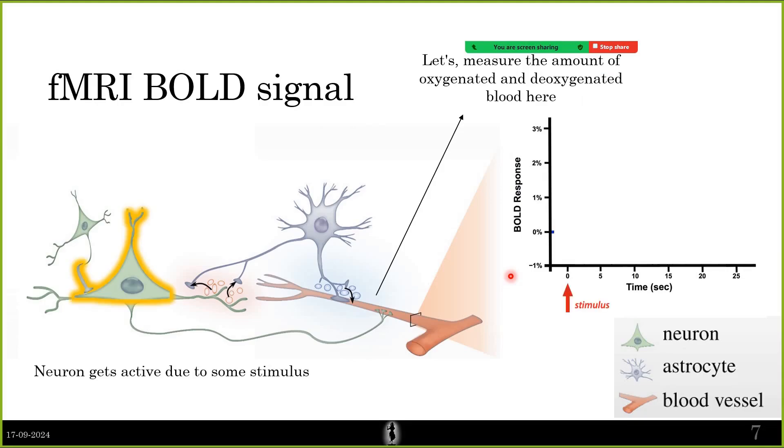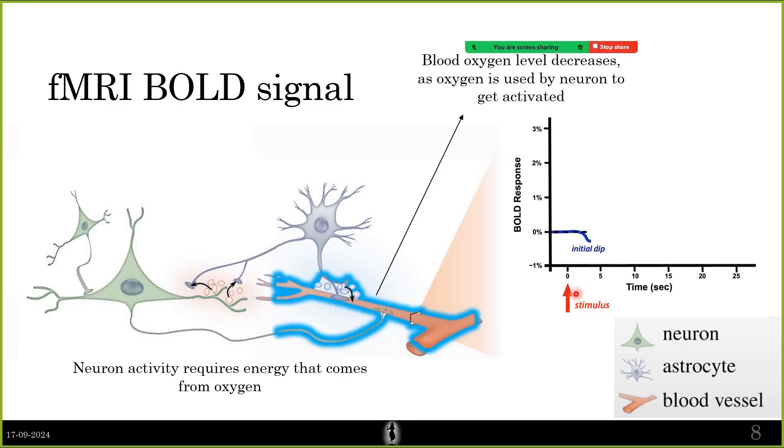Let's say the neuron gets activated due to some stimulus at time t equals zero. The neuron requires energy which comes from oxygen. To get activated, it requires energy that comes from oxygen, and because of that you can see there's an initial dip in blood oxygen level.